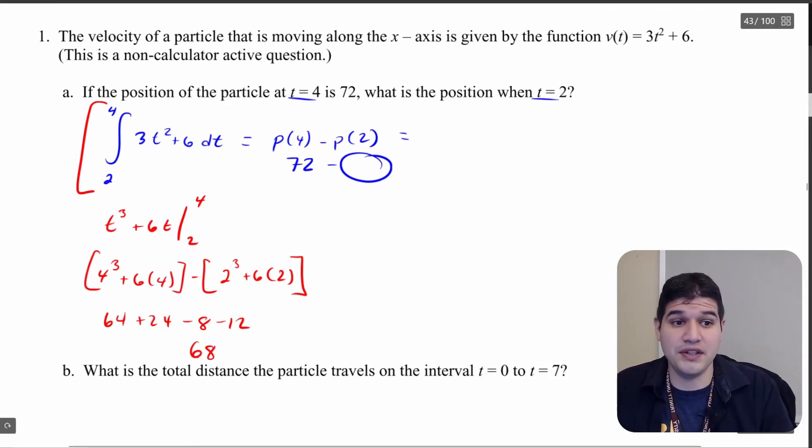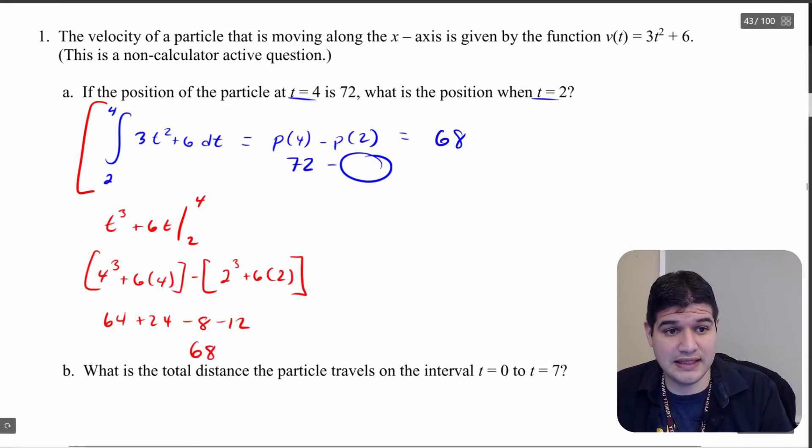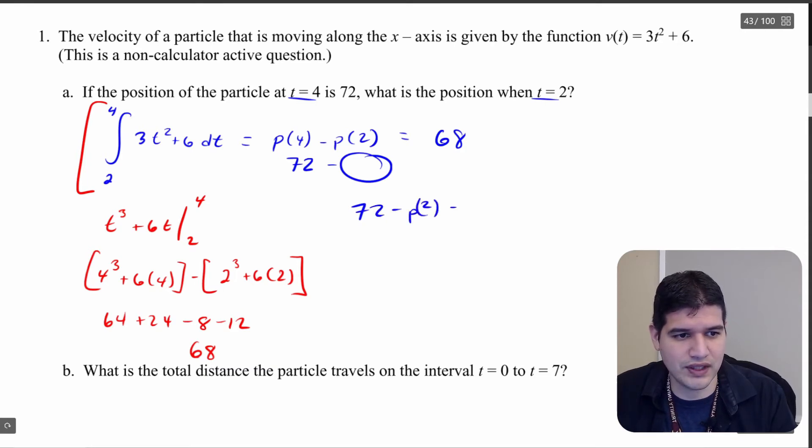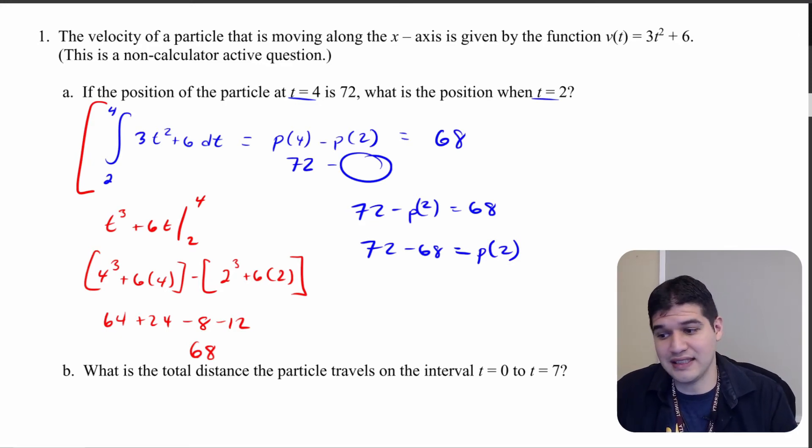So now I'm going to bring that value in because I know that's going to be 68 here. So I'm going to go 72 minus p of 2 equals 68. So 72 minus 68, well that's going to get me the value of p of 2. So 72 minus 68 comes out to be 4 and that's going to be the value of p of 2.